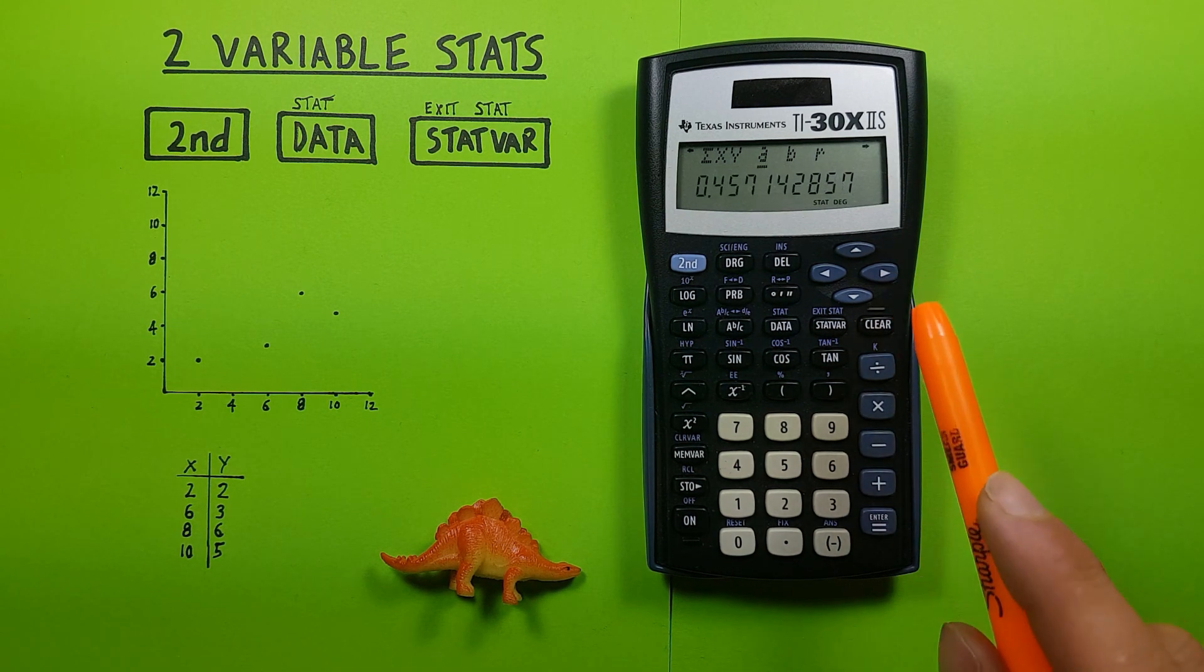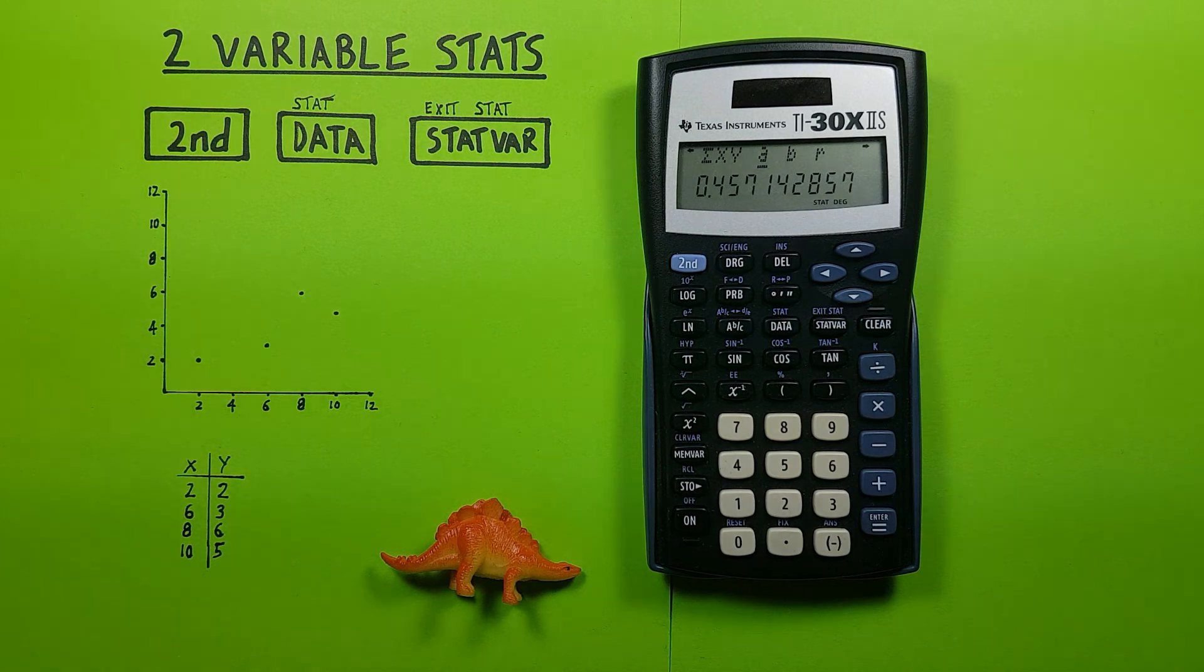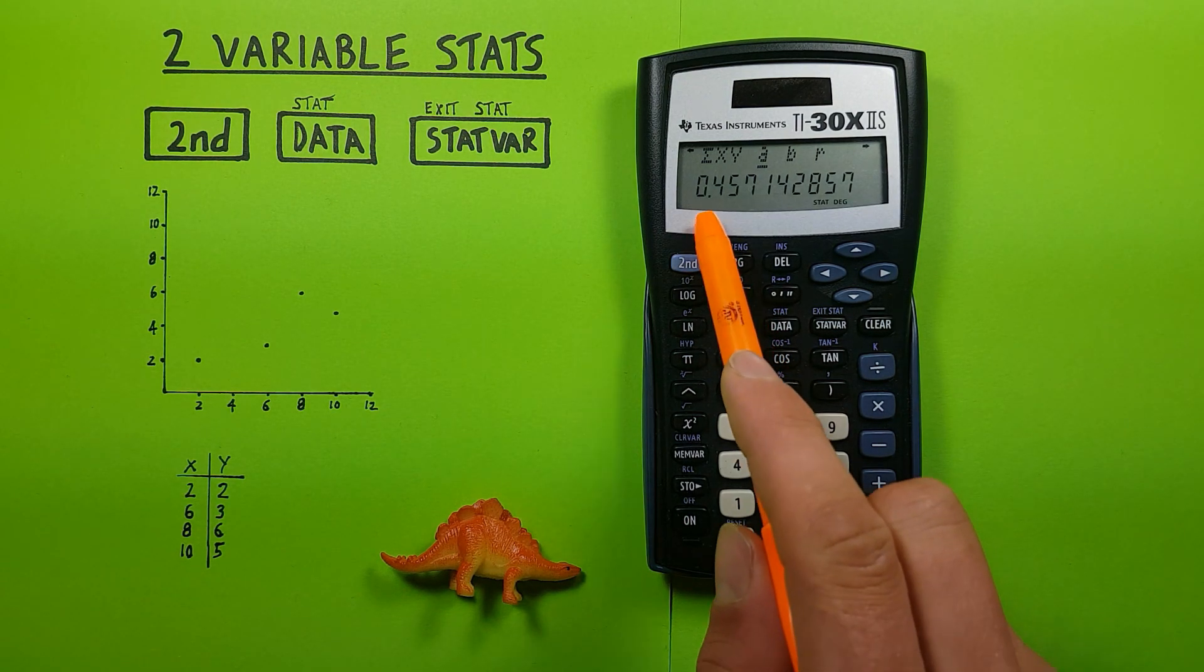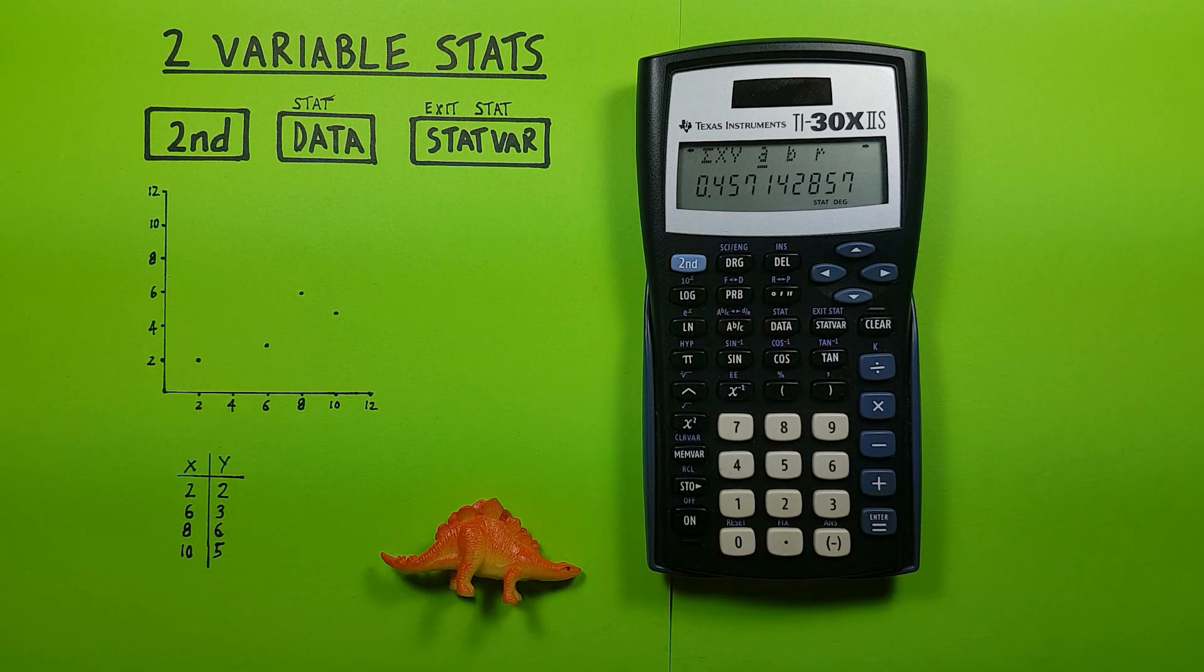And then we get into this. We have a, a is our linear regression slope, so for that we get 0.457 etc.